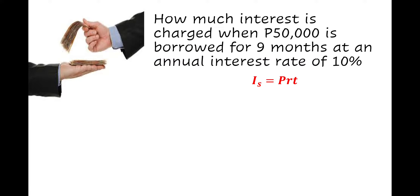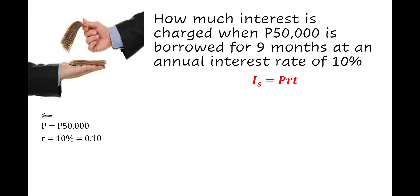For example: how much interest is charged when 50,000 pesos is borrowed for nine months at an annual interest rate of 10 percent? The given values are: principal = 50,000 pesos, rate = 10% or 0.10, and time = nine months. Since time is in months, we convert to years by dividing 9 over 12, which equals 0.75 year.